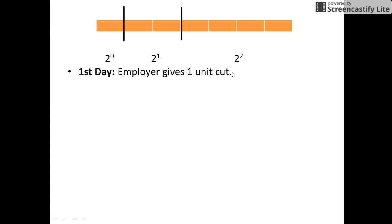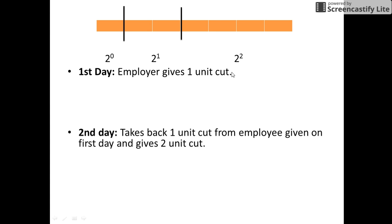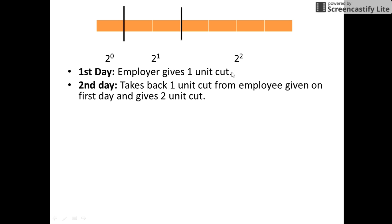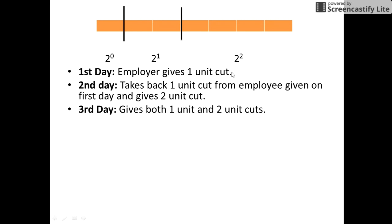At the end of the first day, the employer gives the one-unit cut to the employee. At the end of the second day, he takes back the one-unit cut from the employee and gives the two-unit cut to the employee. At the end of the third day, he gives the one-unit cut to the employee, so the employee has cuts of one unit and two units respectively.